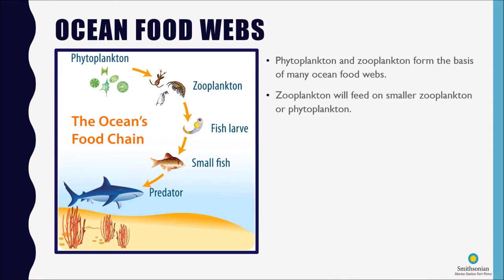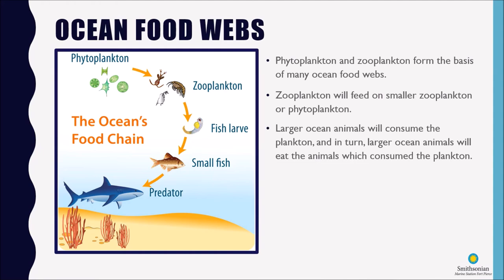Zooplankton will feed on smaller zooplankton, there are other zooplankton that might feed on phytoplankton, and then larger ocean animals will consume the plankton. And then in turn, even larger animals than that are going to be eating the animals which consume the plankton.